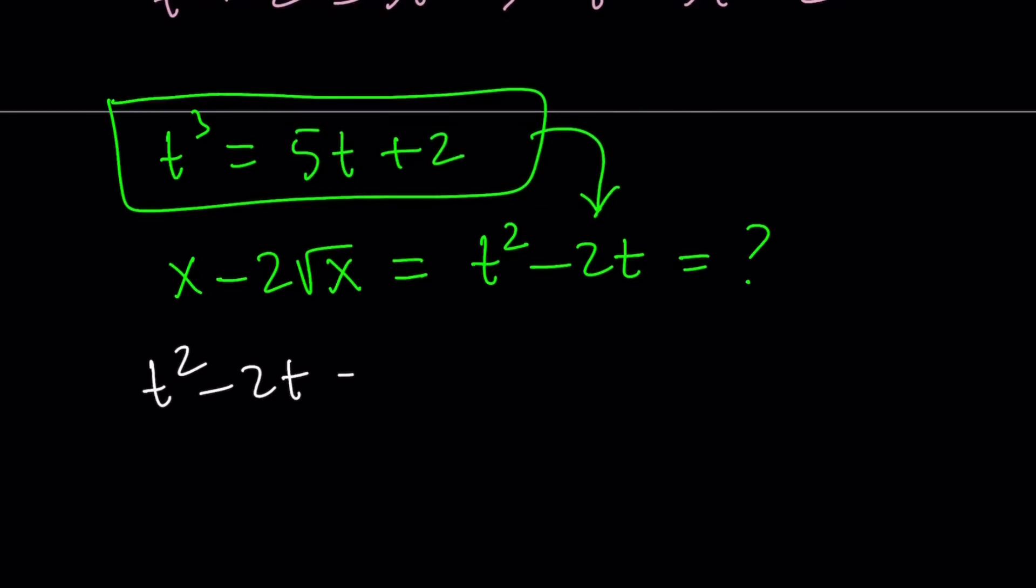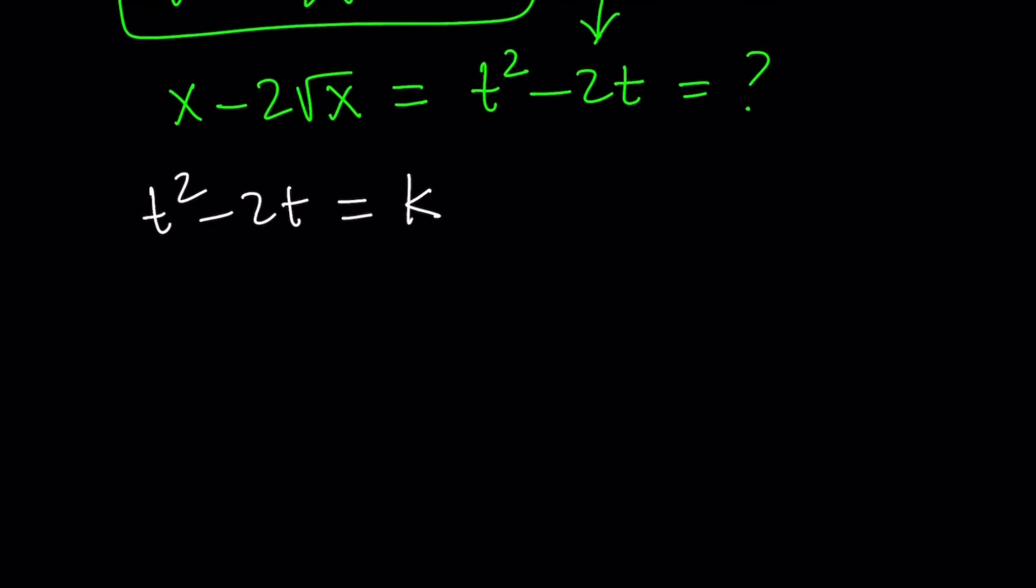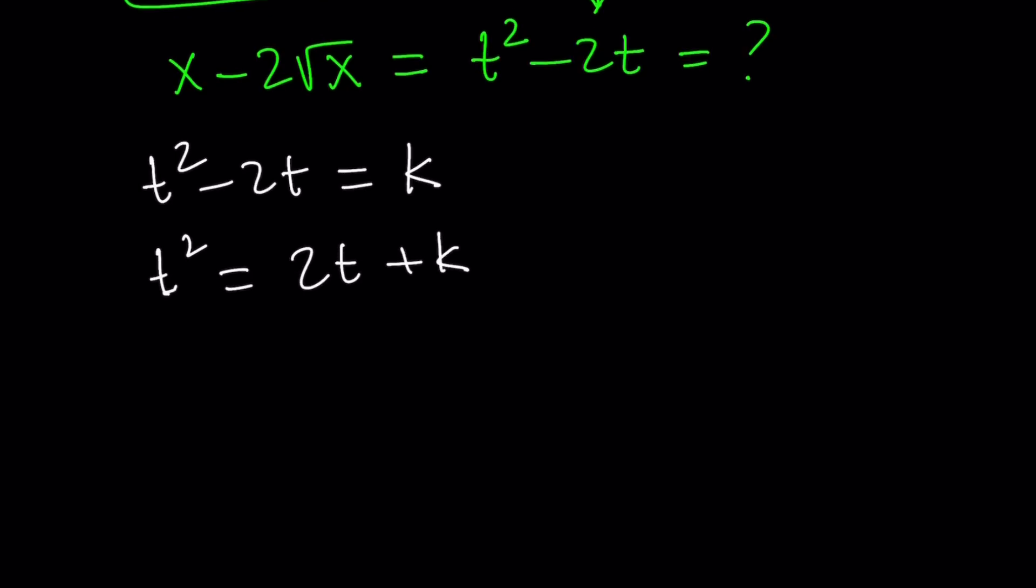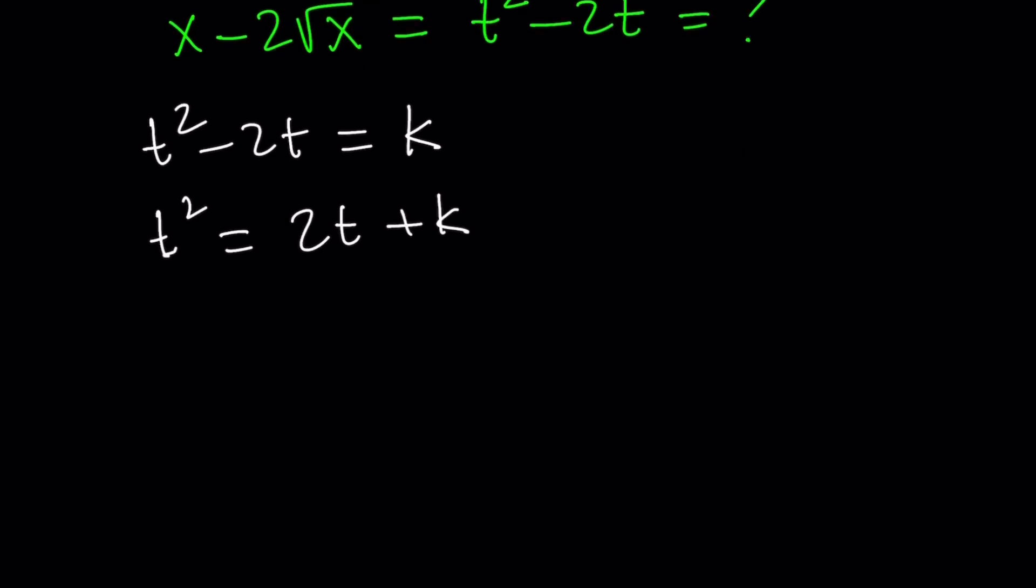First, by setting this equal to a constant. Obviously, the problem wants this to be a constant. t squared minus 2t, suppose it equals k. Now, what do I know? I know that I can isolate t squared and write it as 2t plus k and then find t cubed from here.